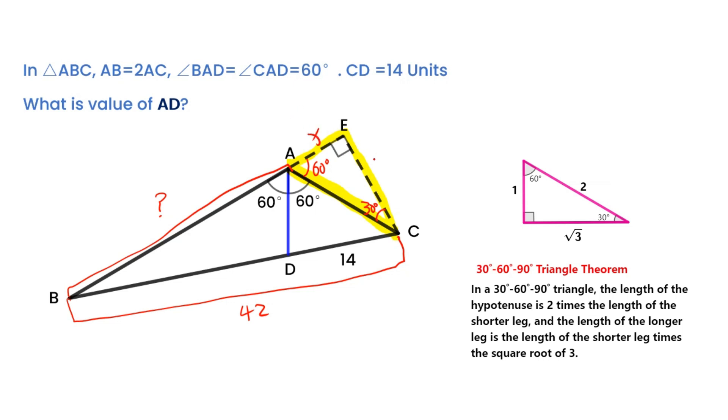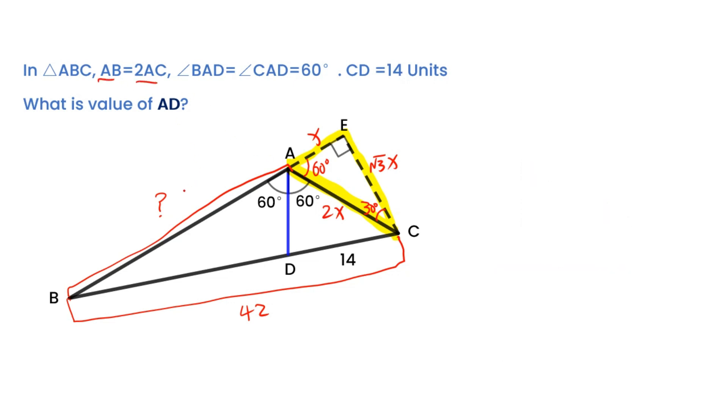Let's say AE is X. So EC equals square root of 3 times X. AC equals 2 times X. AB is 4 times X. We can get BE is 5 times X.